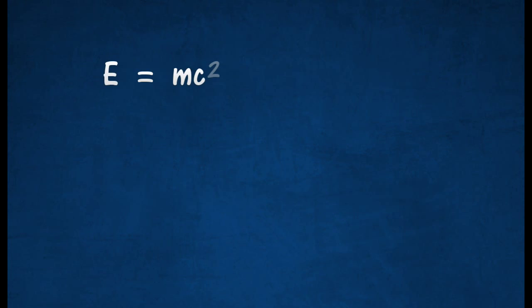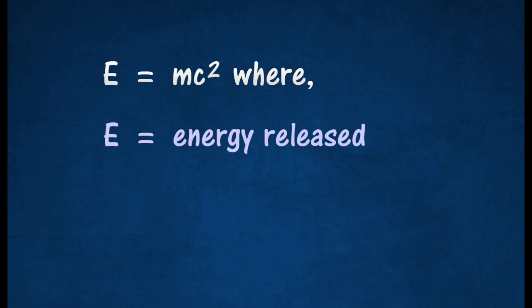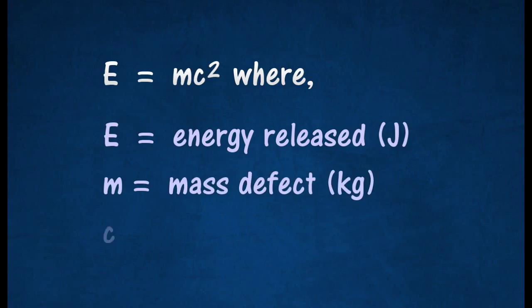The relationship between mass and energy is E = mc² where E is the energy released in joules, m is the mass defect in kilograms, and c is the speed of light in meters per second.